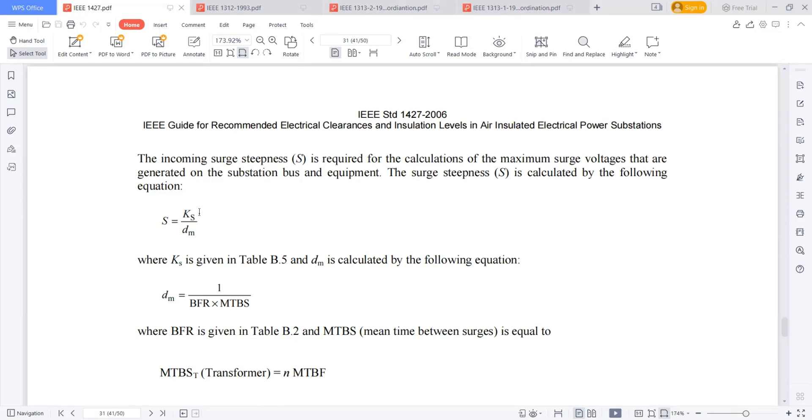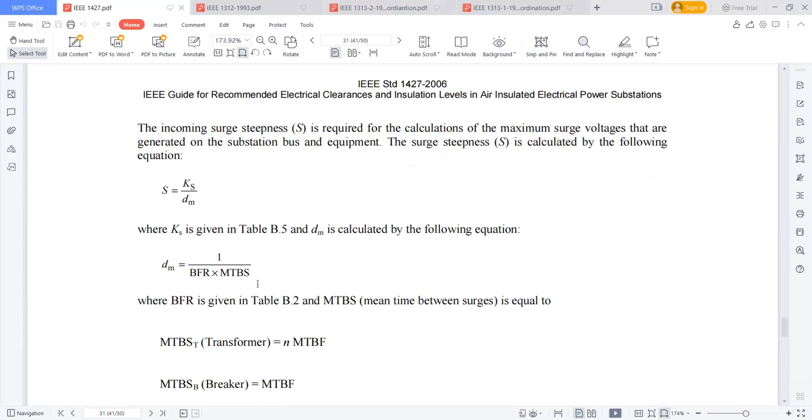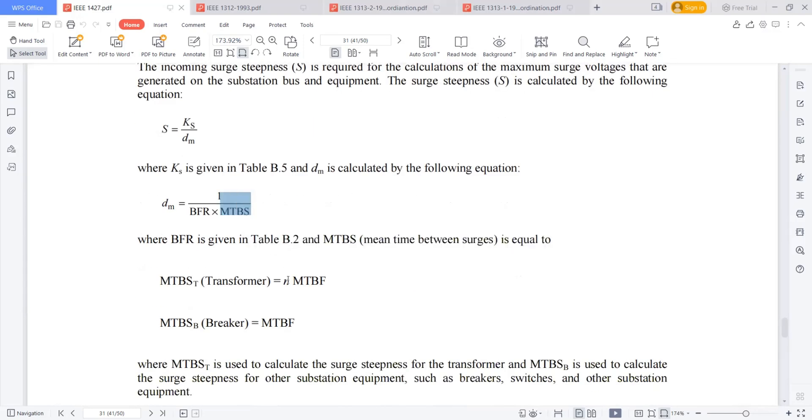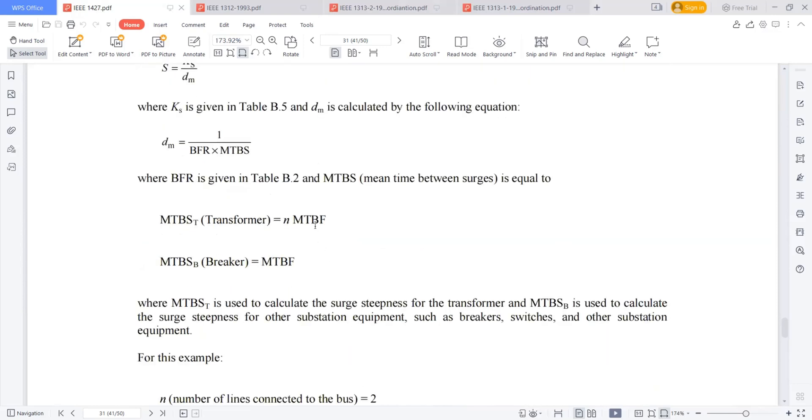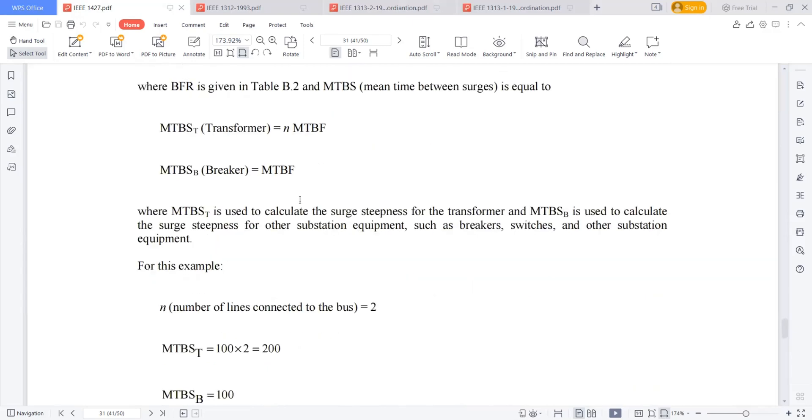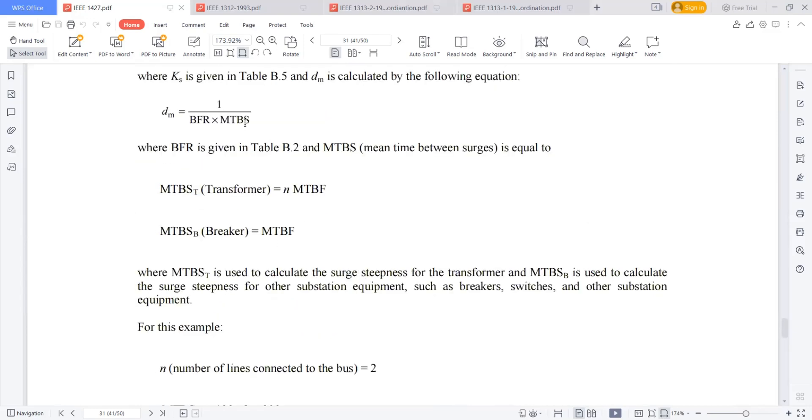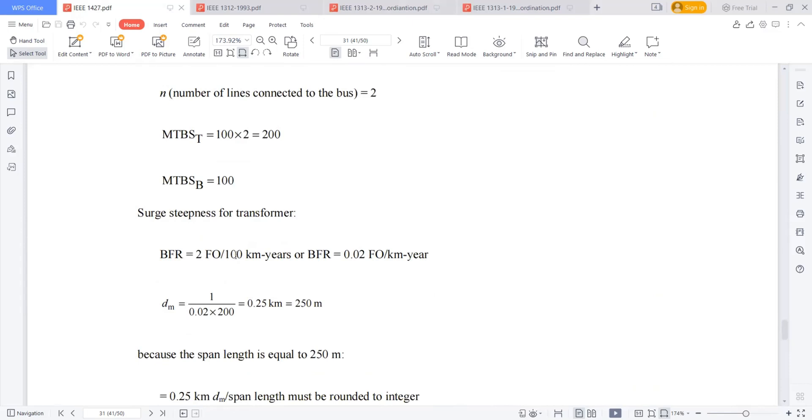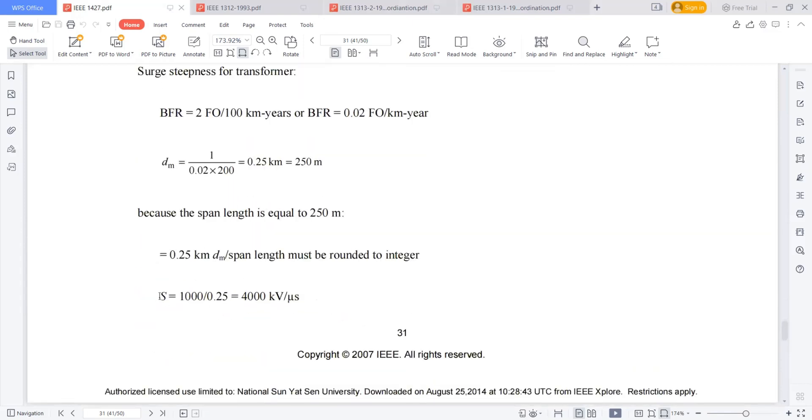How to calculate the incoming surge steepness? Incoming surge steepness is equal to KS, which is some constant, by DM. DM again depends on BFR, back flash rate, and MTBS, mean time between the surges. Where the mean time between the surges depends upon N into MTBF, mean time between the failures of the equipment. If two lines are connected, N equal to two. So I calculated the MTBS and I calculated the DM and I calculated the back flash rate. And from this, I found the surge steepness is 4,000 kV per microsecond.